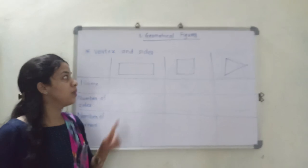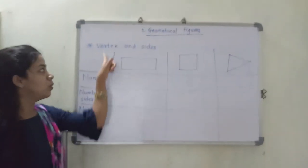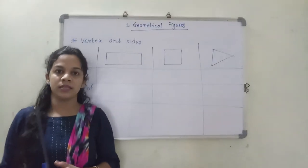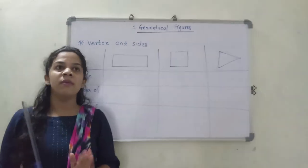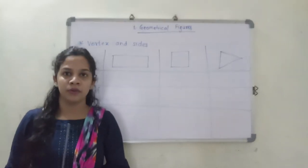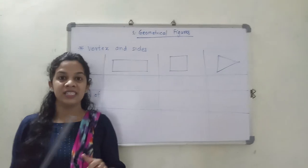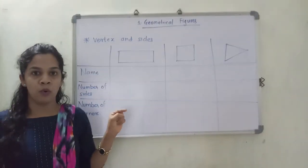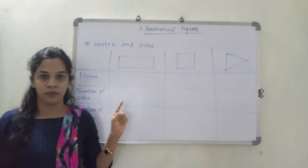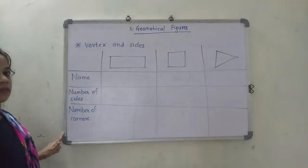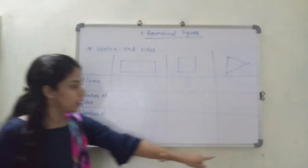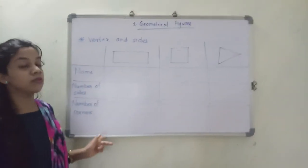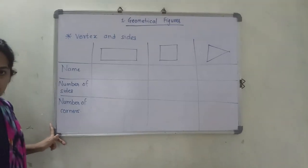Now we are going to start with our next part - that is the vertex and the sides. What do we mean by vertex and what do we mean by sides? You will be familiar - you are staying right now in one room. You can see the edges, you can see the sides of your room. If you consider this board over here, you can see parts of it. These are called edges, and we can also say these are called sides.